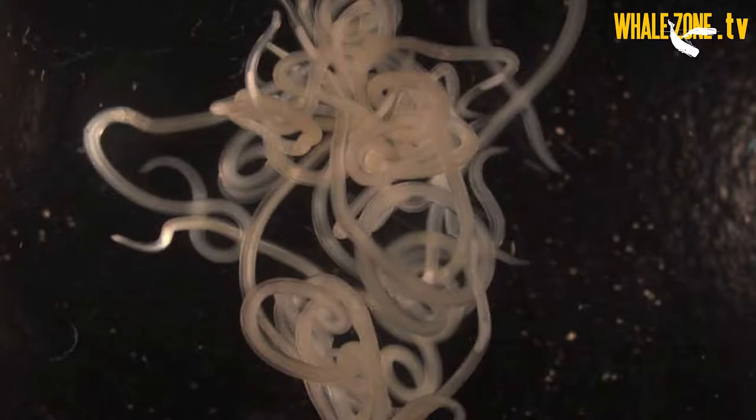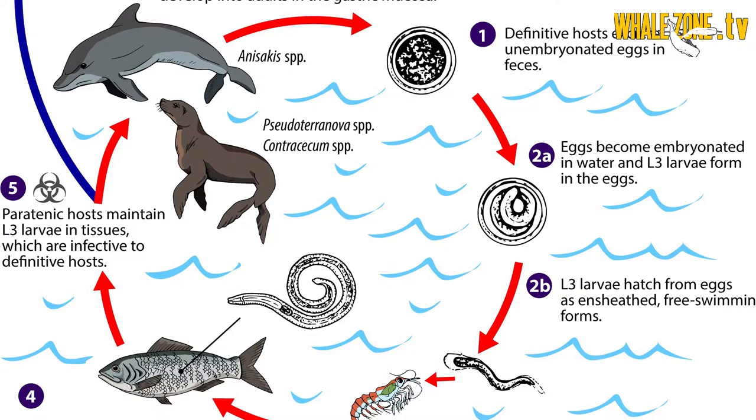The second type of parasite that can affect whales and dolphins is represented by nematodes or roundworms. A classic example is Anisakis. This roundworm can infect the stomach of whales and dolphins, and in some cases also of humans, especially in consequence of the consumption of raw fish.